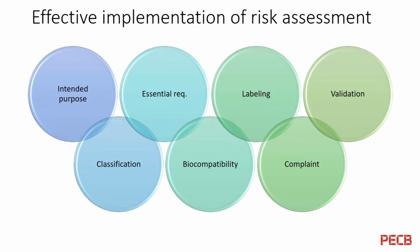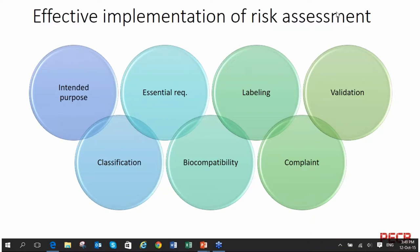Now I need to discuss the effective implementation of risk assessment. If I put together these seven things and digest them: intended purpose, essential requirements, labeling, validations, compliance, biocompatibility, and the classification of the product — those terms intrinsically and inherently contain risks that need to be addressed in the risk assessment.